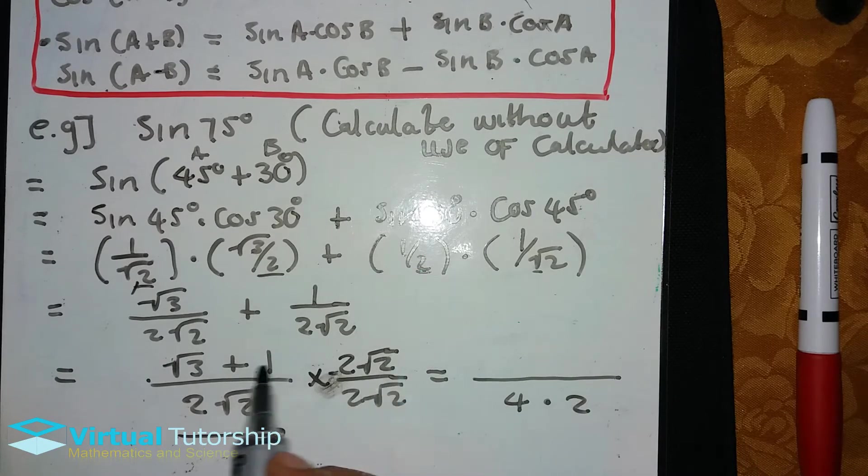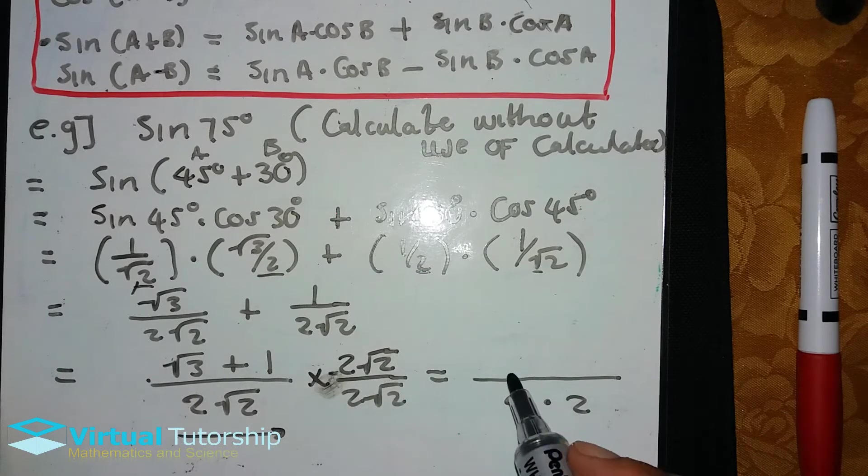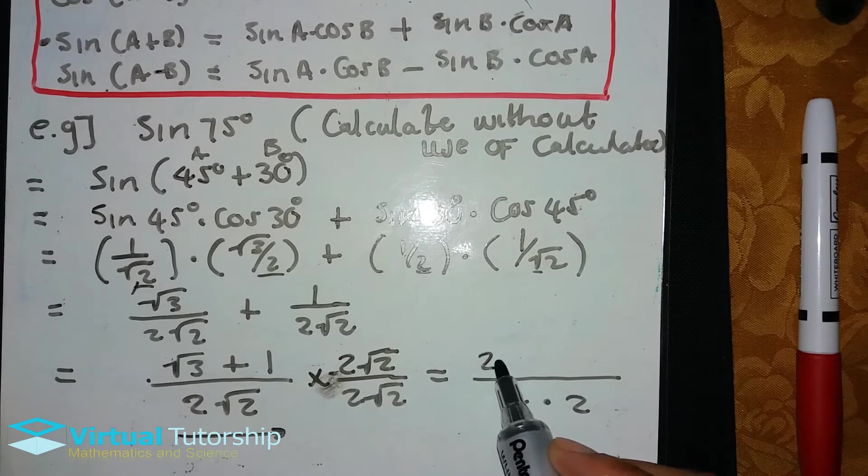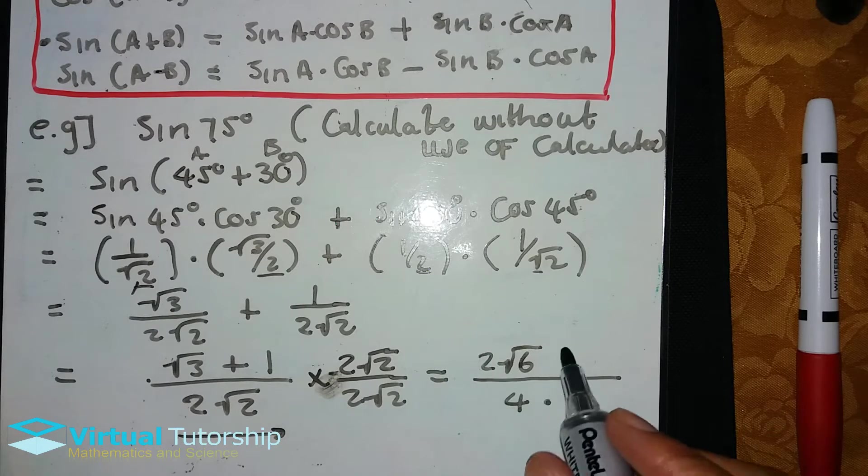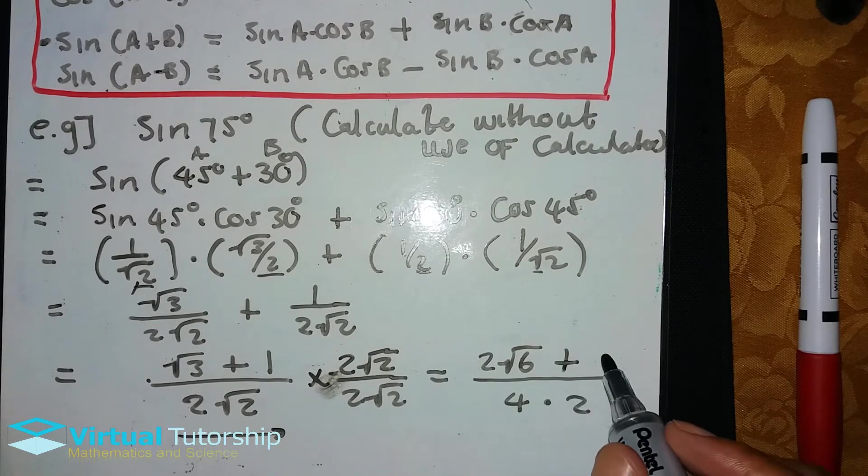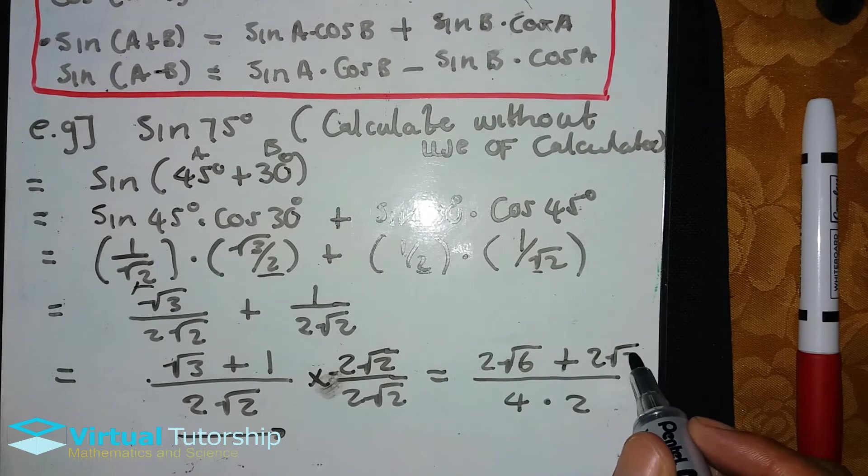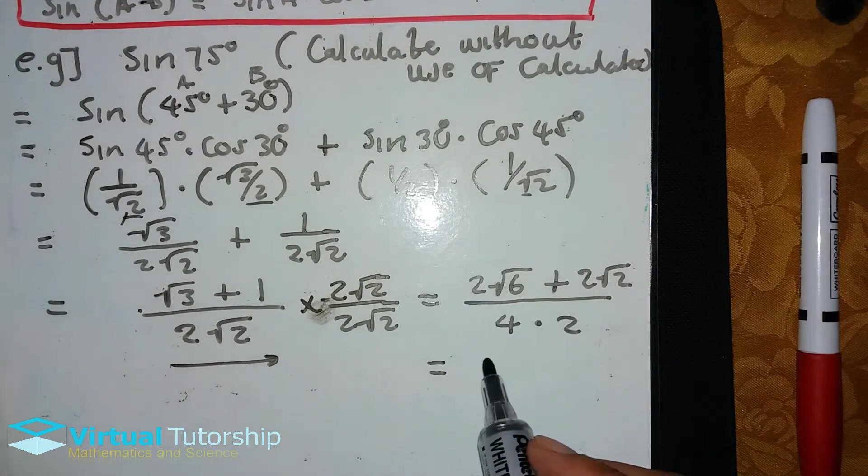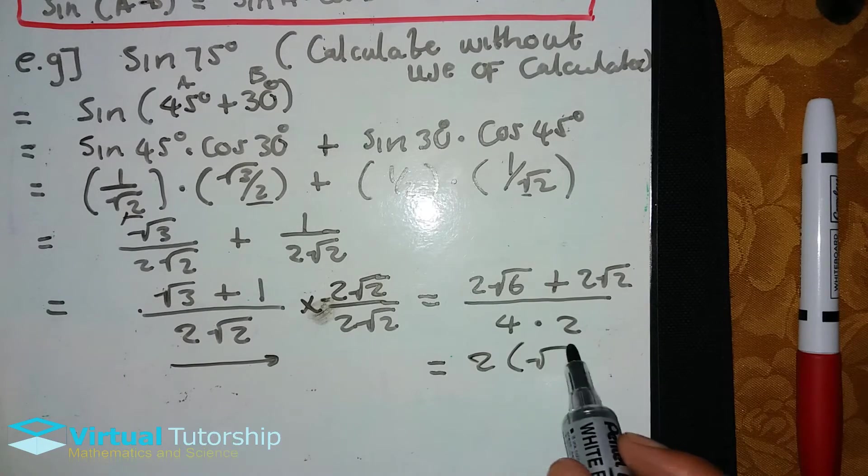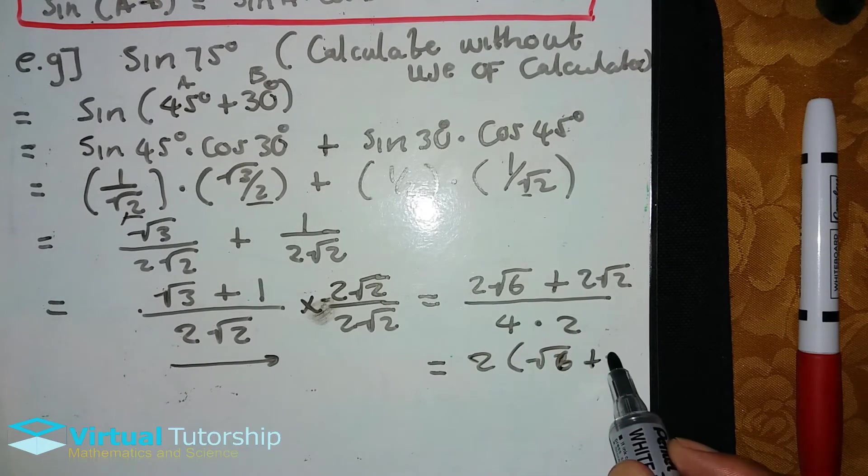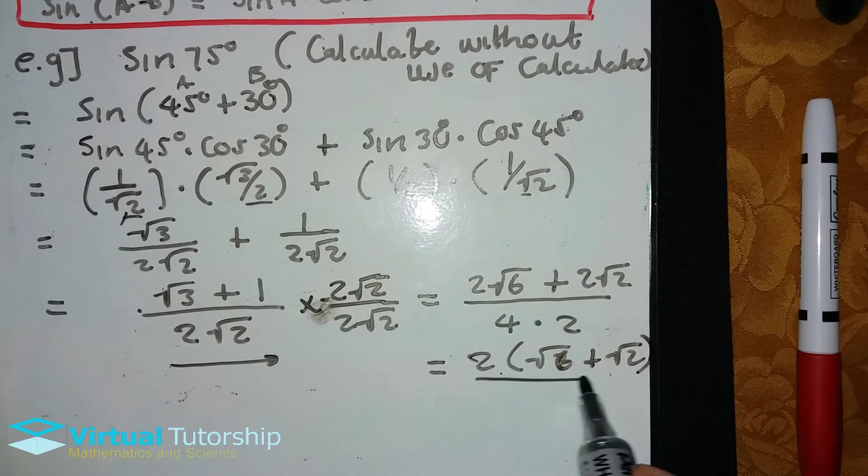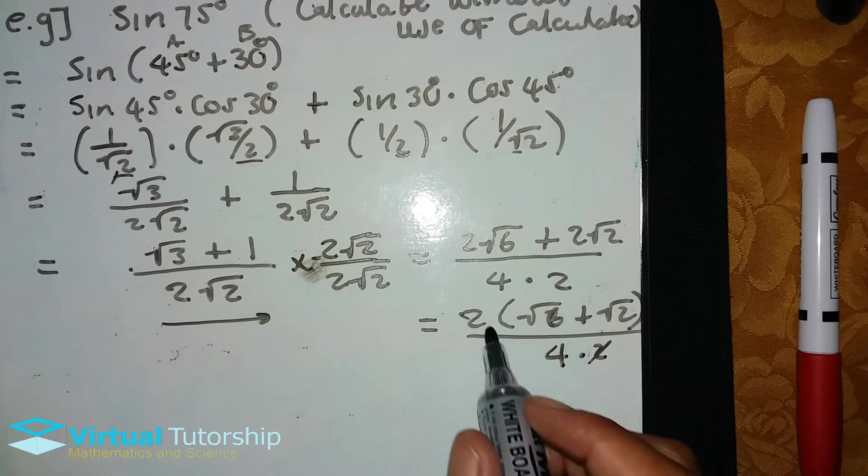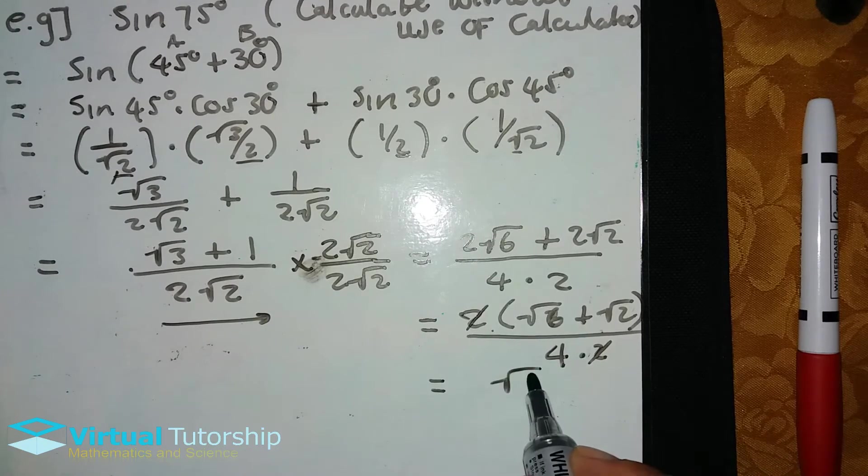This multiplied by that equals two times two, which is four, times square root two times square root two, which is two. So we multiply and get 2 square root 6 plus 2 root 2. The 2 is a common factor, so we can factor it out: 2 times square root 6 plus square root 2 over 4 times 2.